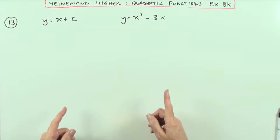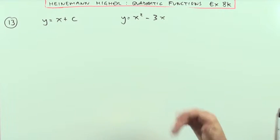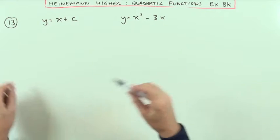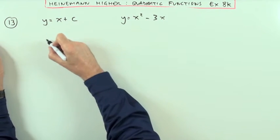Well if it's a tangent that means if you proceed as if you're trying to find the point of intersection, you derive an equation with only one solution. So the first thing would be proceed as if you're trying to find a point of intersection.